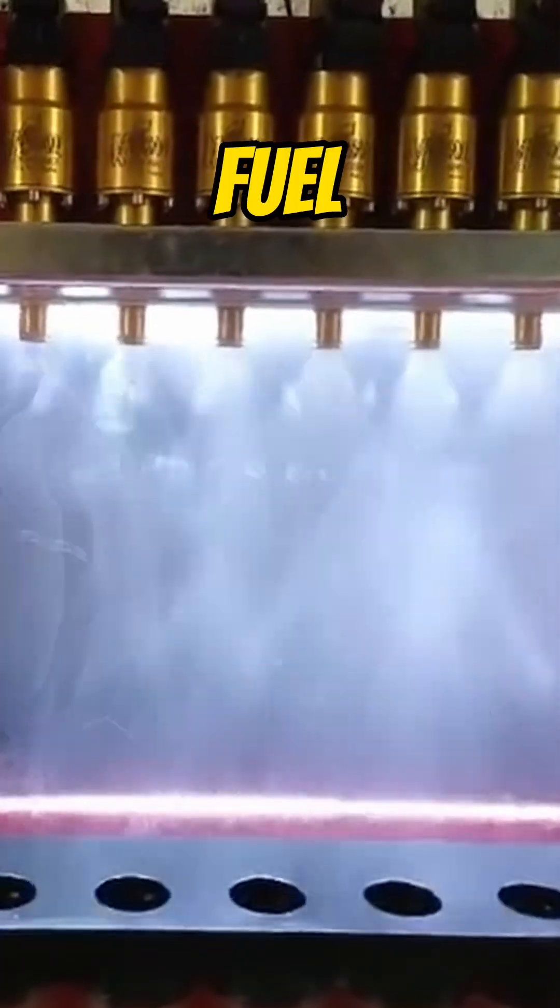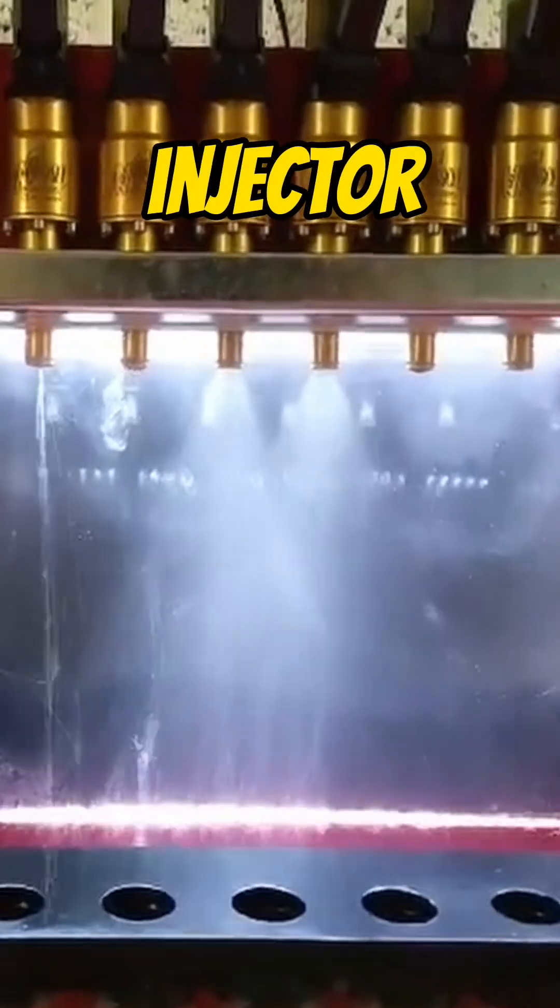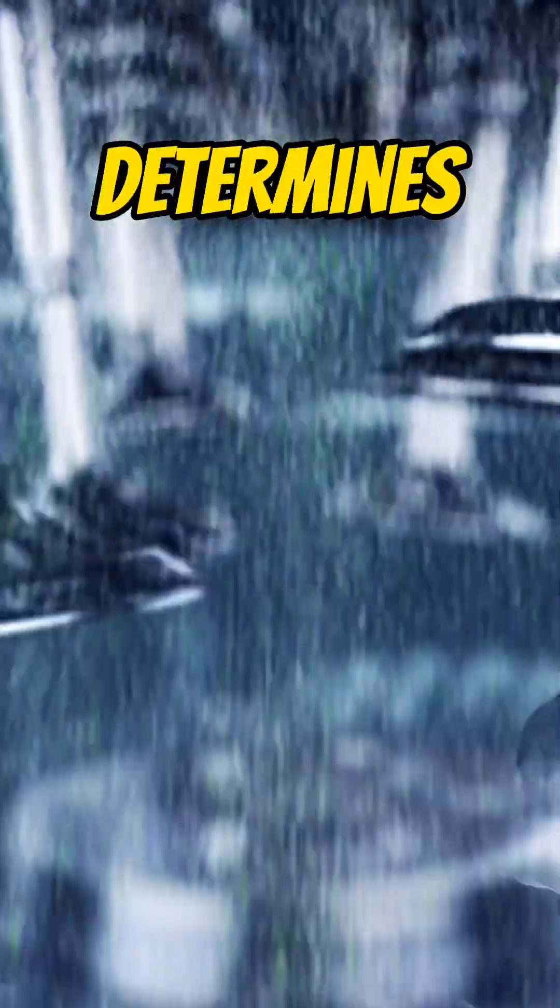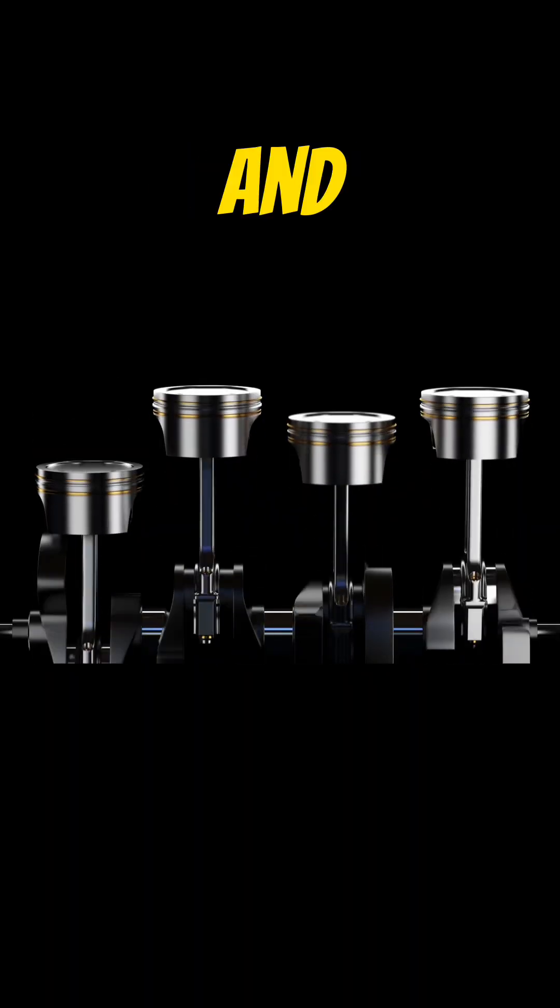Number two, fuel injectors. The fuel injector is a small valve that sprays fuel into the engine's combustion chamber. The amount of fuel that is sprayed is controlled by the engine's computer, which determines the amount of fuel needed based on various factors such as the engine speed and load.